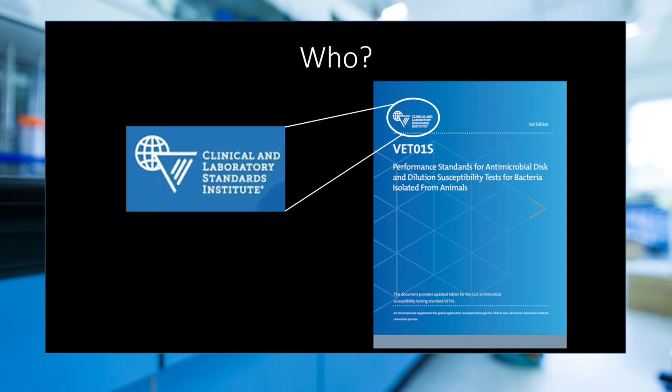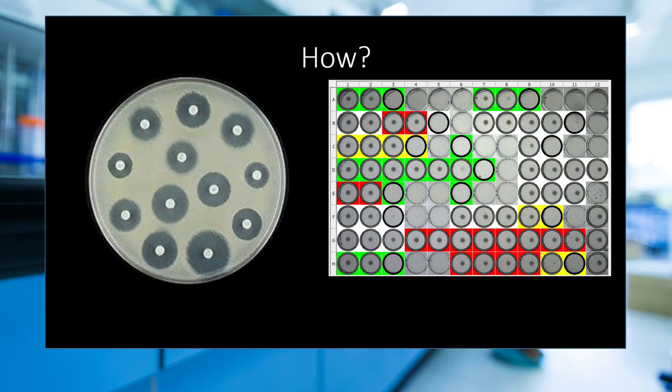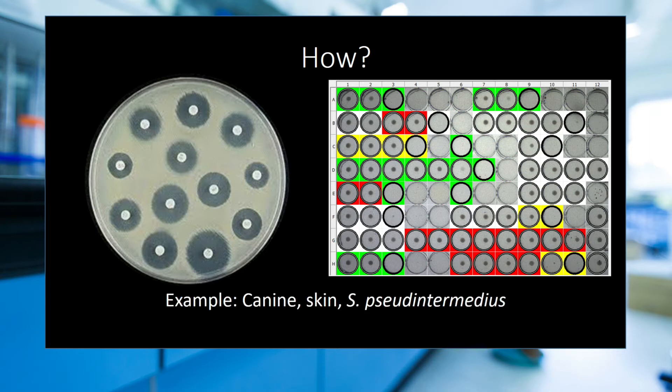We do not have standards for every possible scenario, and this leads to no interpretation — which I'm sure you've seen on a lab report to your great disappointment. To explain how interpretations work, I will give you an example for the two most common AST methods used in veterinary diagnostic laboratories: the disk diffusion method and the broth microdilution method. For both test methods, I will use the same example — a Staphylococcus pseudintermedius isolate from canine skin — and focus on just two drugs for the sake of time.